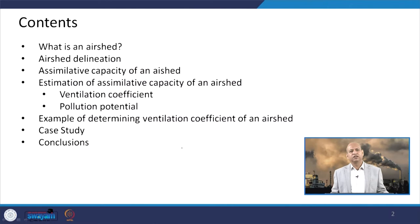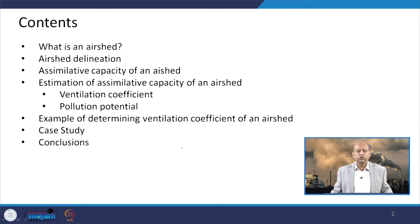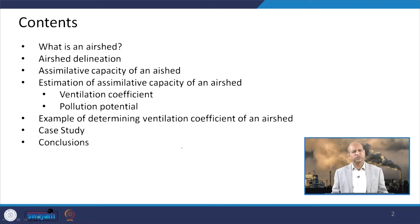First, we will discuss what is the air shed, then explanation of the air shed and assimilative capacity. Then we will see how to estimate the assimilative capacity through techniques of ventilation coefficient or pollution potential, followed by one example of determining the ventilation coefficient of an air shed. Then we will have a case study so you can visualize how to estimate the assimilative capacity of an urban air shed, and then we will conclude.